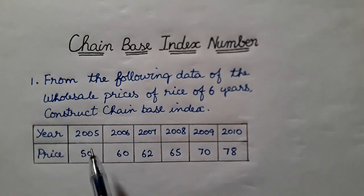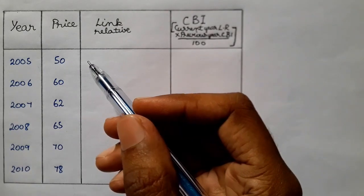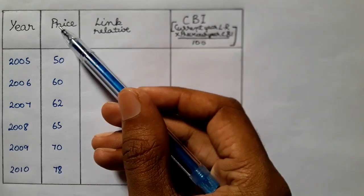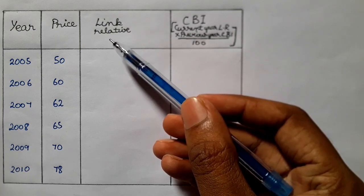Year and price: 2005-50, 2006-60. How do we get this? Let's look at the next number. Here is a table of column. If you look at the table of column, the year and price are already added. Let's look at the link-related column.